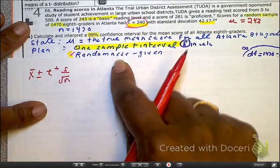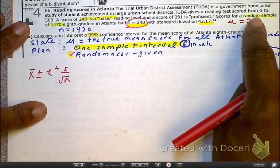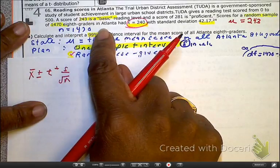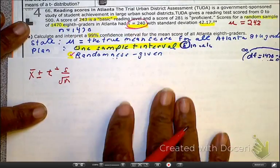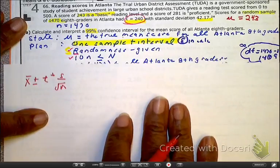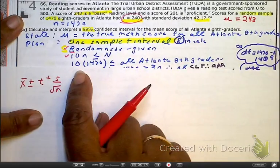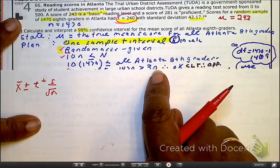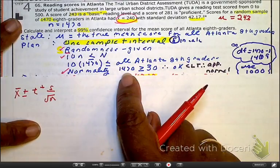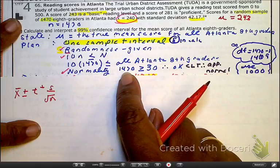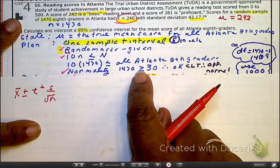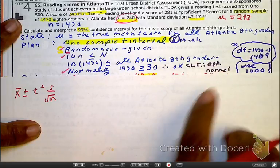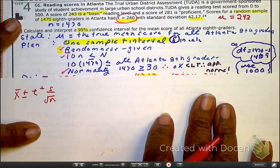Here, randomness. I should have been more specific about this. I should have said here, you have a random selection of 147 8th graders in Atlanta. Your 10% rule. Here, you've got 10 times a sample is going to be less than all the Atlanta eighth graders. Next, normality. Yes, because you've got 1,470 greater than 30, it's okay due to CLT, so therefore, approximately normal. So there's our plan.